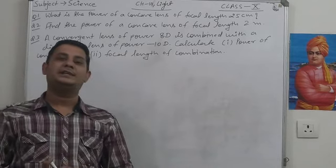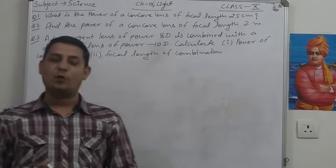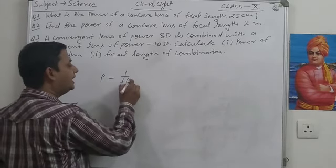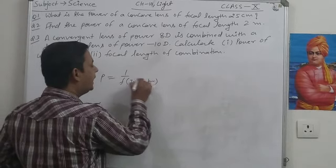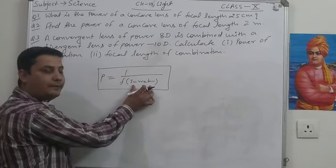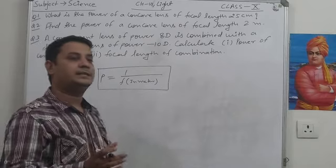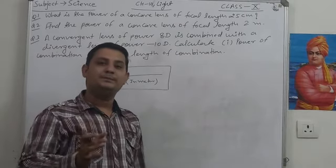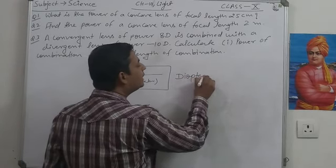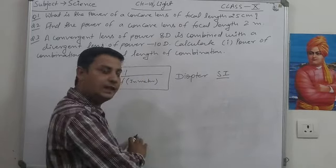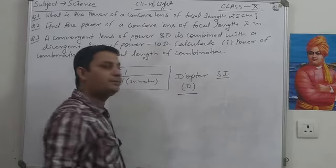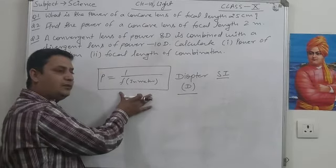We know that the power of the lens formula is P is equal to 1 upon f, where f is the focal length in meters. If the focal length is given in meters, we will use this formula for the calculation of power of the lens. Power of the lens is denoted by capital P, whose SI unit is Diopter, denoted by capital D.